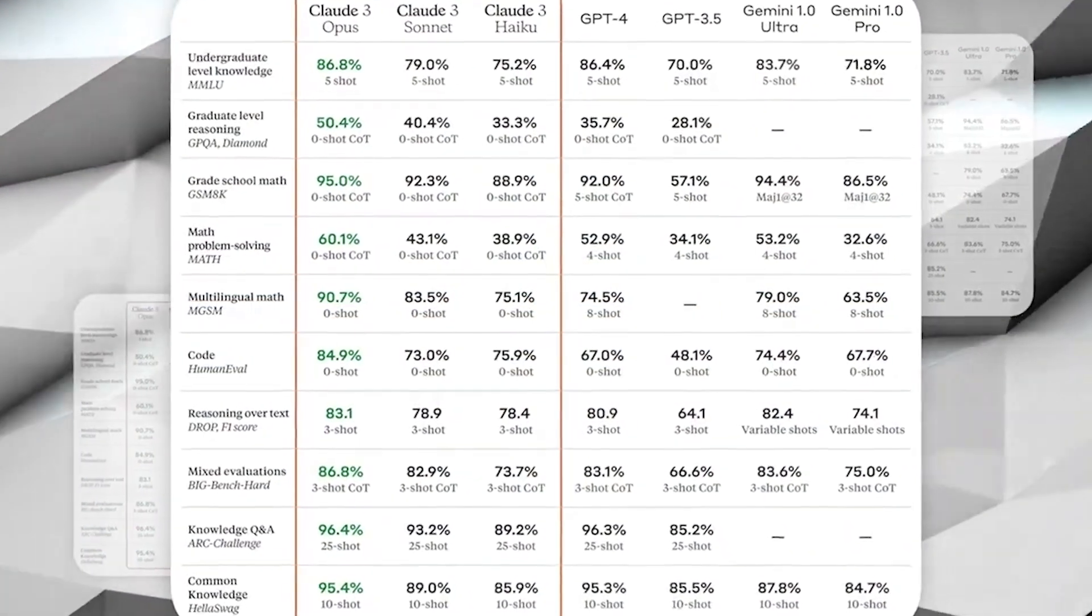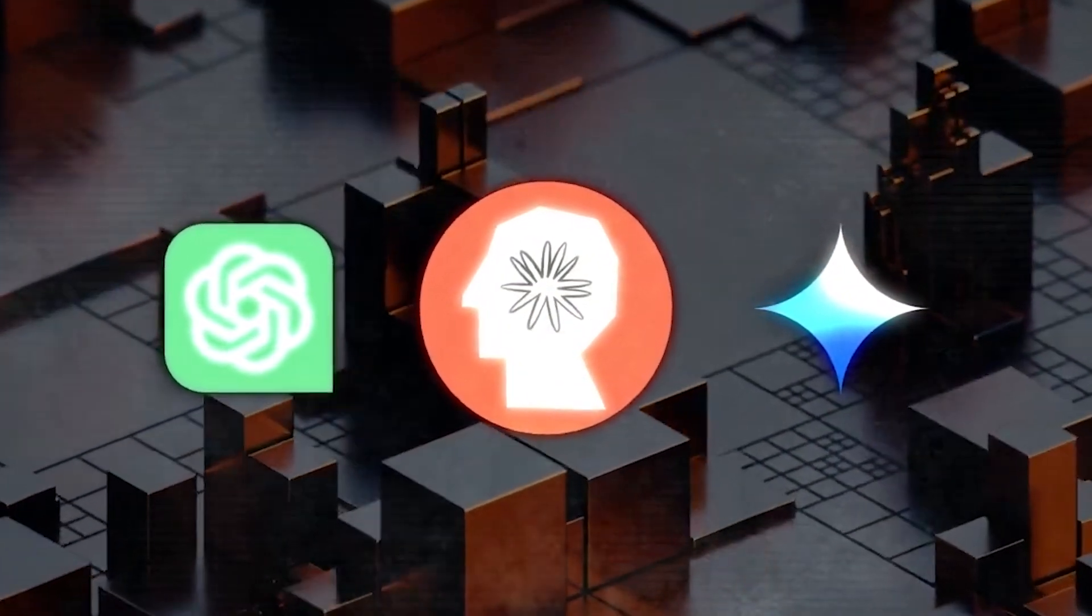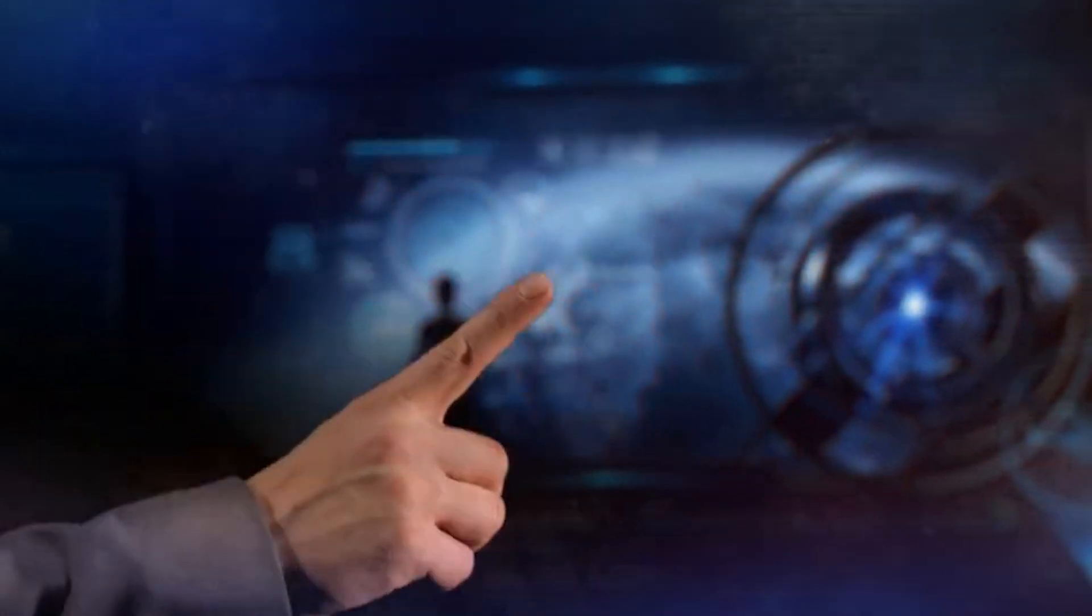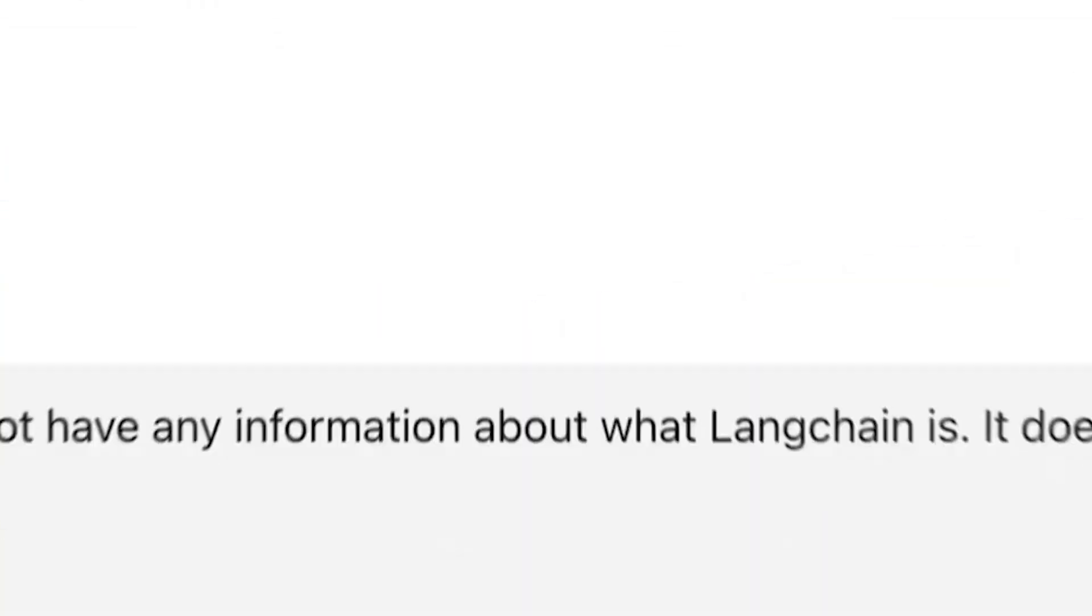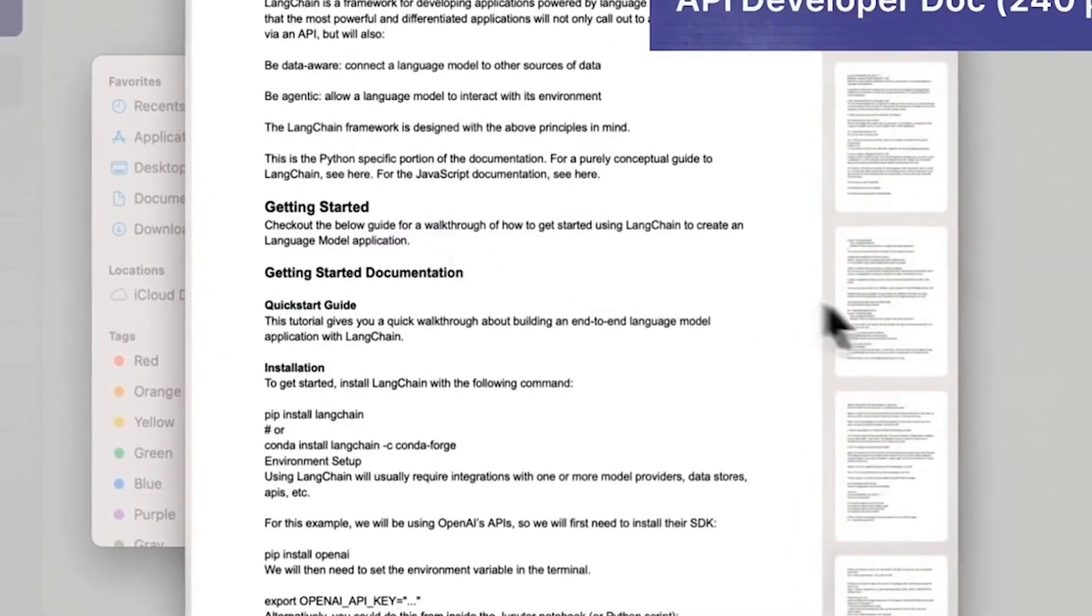One of the cool things about Sonnet is that it can understand and analyze images, not just text. This means it can look at photos, charts, graphs, and even technical diagrams and understand their content. Sonnet is also really good at understanding and providing information in different languages. This makes it versatile and adaptable to a wide range of applications.